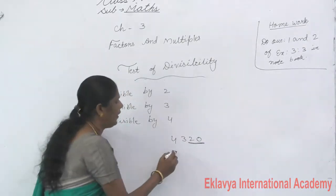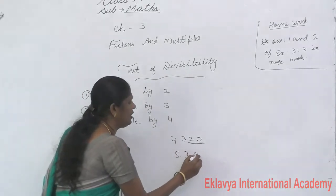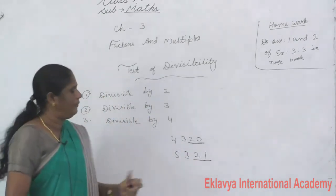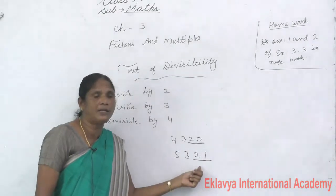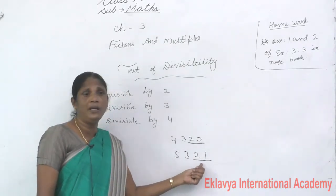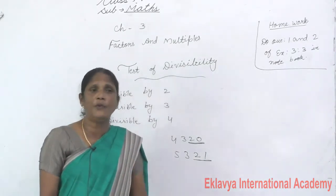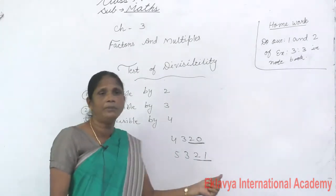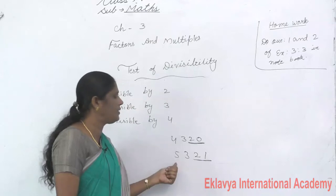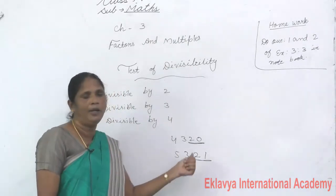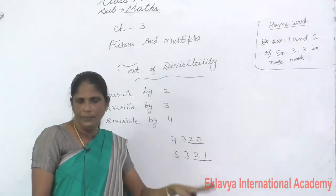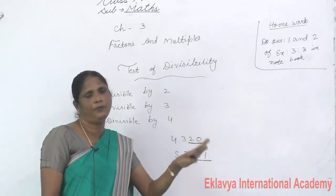Another example: 5321. The last 2 digits are 21. Is 21 a multiple of 4? No — 21 does not appear in the table of 4. Therefore 5321 is not divisible by 4.